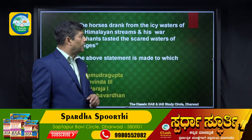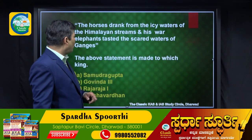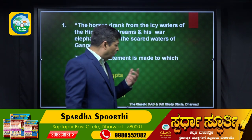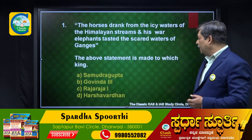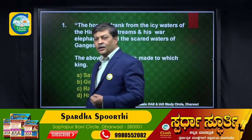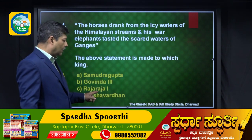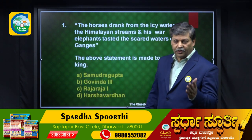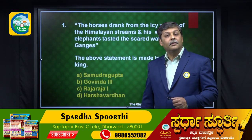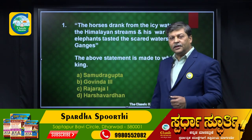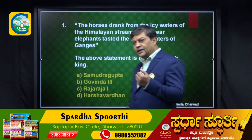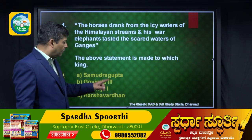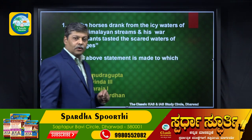The first question: 'His horses drank from the icy waters of the Himalayan streams and his war elephants tasted the sacred waters of the Ganges.' To which king is this statement related? The options are Samudra Gupta, Govindadhi III, Raja Raja I, and Harshavardhana. The answer is Govindadhi III.